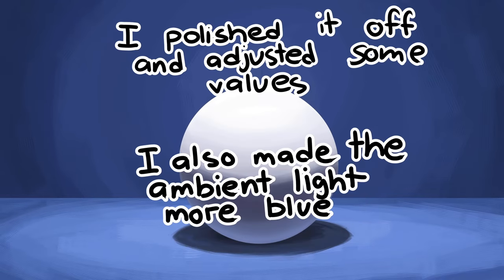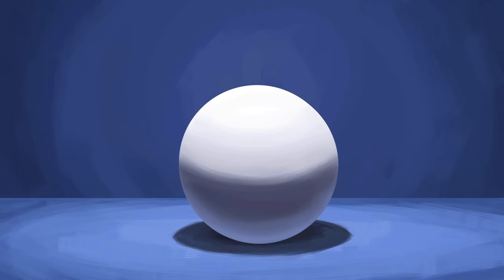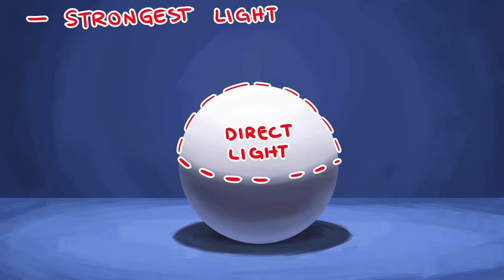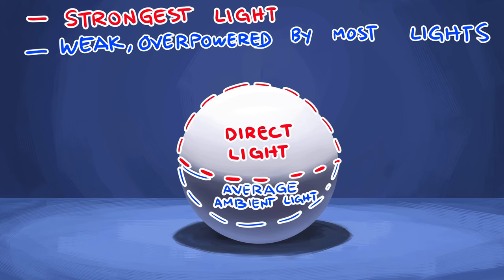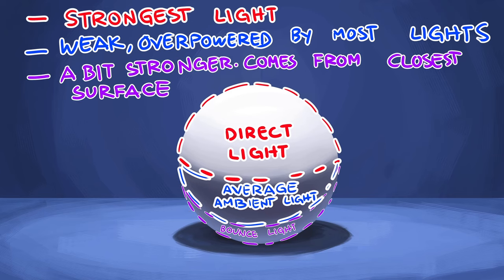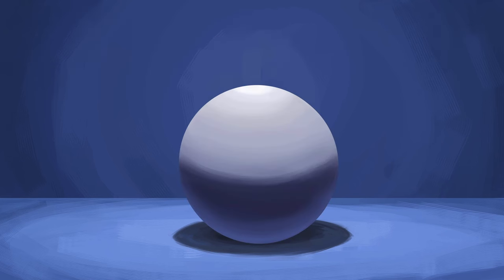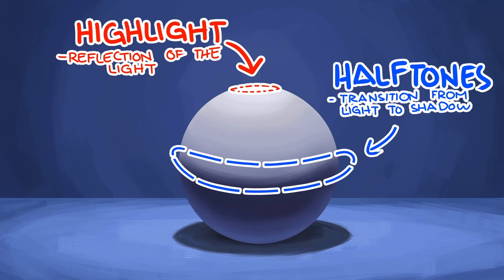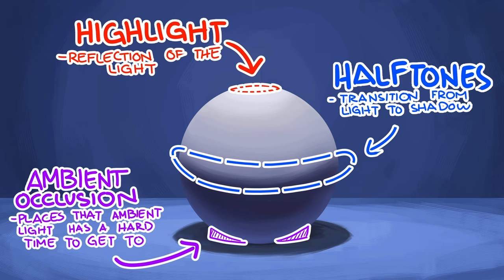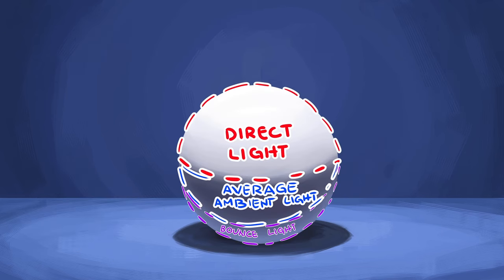I like to divide lighting into three groups: the direct light, which is the strongest light in the scene; the average shadow, which is the ambient light coming from all directions; and the bounce light that comes from the closest surface, oftentimes the floor. There's a lot more to consider, especially if you want a more realistic art style, but I think focusing on and getting comfortable with these three is much more important.